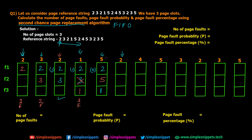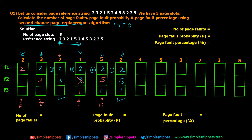Page 2 is requested. Page 2 is already there in memory with a reference bit of 0 — wait, we just set it to 1 in the previous step. So we write pages 2, 5, and 1 as is. Since page 2 was again requested and did not result in a page fault, the reference bit for page 2 is set to 1. Whenever there is a repetition of a particular page, the reference bit for that page is always set to 1.